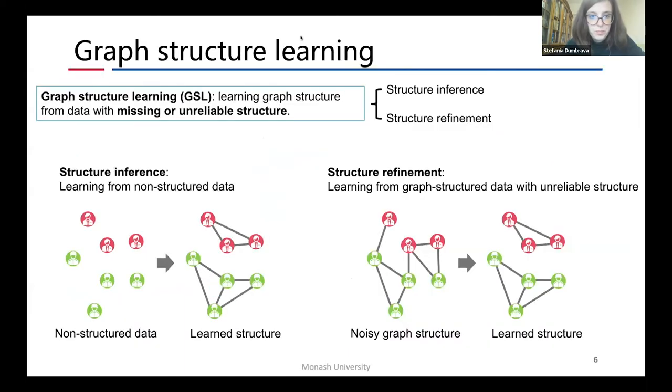To address these limitations, graph structure learning techniques that learn graph structure from data with missing or unreliable structure is proposed. Here we formulate graph structure learning into two scenarios: Structure inference is to learn graph structure from non-structural data, and structural refinement is to generate an optimal structure from the noisy one.